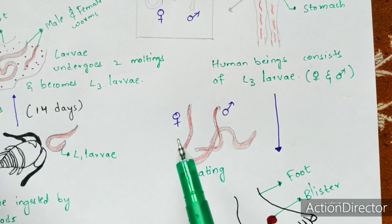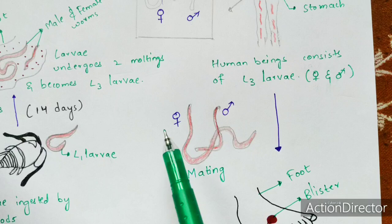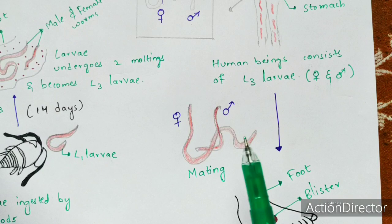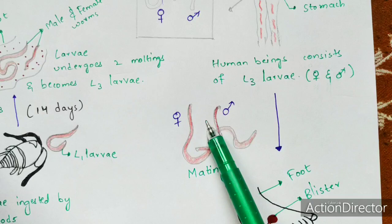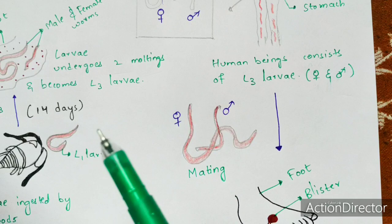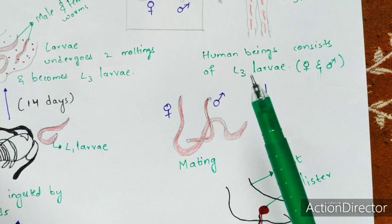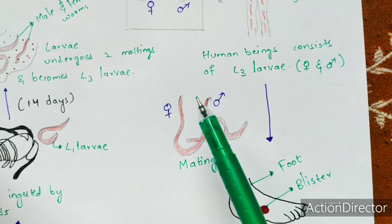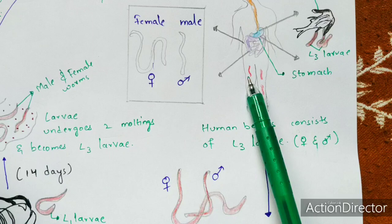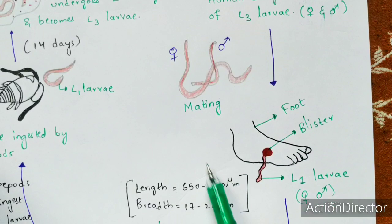Once active, the L3 larvae begin mating and copulation. After copulation, the male worm dies, as mentioned in the introduction. The female worm becomes pregnant after mating. Between two to three months later, the female worm lays embryos directly — not eggs. The dead male worm is expelled through feces. The pregnant female worm then migrates toward the foot region.